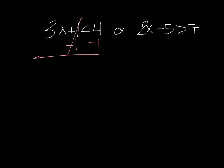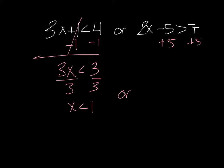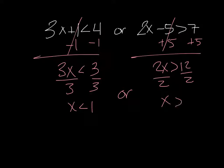I subtract one from both sides, I get 3x is less than 3, divide by three on both sides, X is less than one. Or, then I go over here and do this one as if I'm doing a whole other problem. It's like two problems in one. Divide by two and I get X is greater than six.